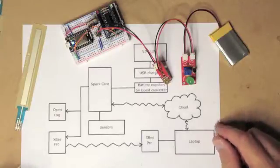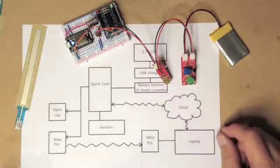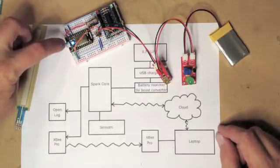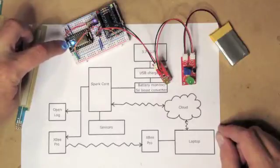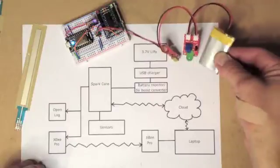This is something that's really super easy to build using off-the-shelf components. Anyone who can use a soldering iron can build this. It has a Spark core, which is a Wi-Fi microcontroller, and that's powered by a lithium polymer battery here, a single cell.